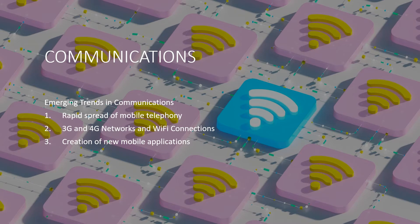The second dimension of ICT is communications. Communication technology is the transfer of messages or information among people and machines through the use of technologies. Types of communication technology are telephone, radio, TV, computer networks, and mobile phones. An emerging trend in communication is the rapid spread of mobile telephony. This trend toward using mobile phones started in 2010 and continues to the present time, and has replaced the telephone as the main means of instant communication.